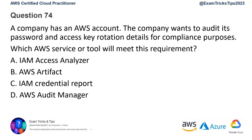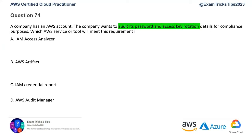Question number 74. A company wants to audit its password and access key rotation details for compliance purposes. Which AWS service or tool will meet this requirement? Let's use the elimination technique. IAM Access Analyzer focuses on access permissions for resources - you can analyze IAM permissions, but this will not specifically help you audit password and access key rotations. So we rule that out. AWS Artifact provides compliance reports for various regulatory requirements, but it is not specifically created for password or access key rotation audits. It doesn't track that.